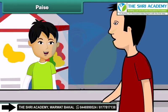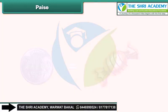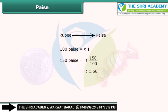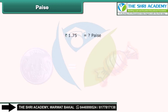Rahul purchased 1 toffee for 1 rupee. How will you convert this rupee into paise? 100 paise makes 1 rupee. So 150 paise equals 150 divided by 100 rupees, which is 1.50 rupees. When converting paise to rupees, we divide by 100. To convert 1.75 rupees into paise, multiply 1.75 by 100 to get 175 paise.